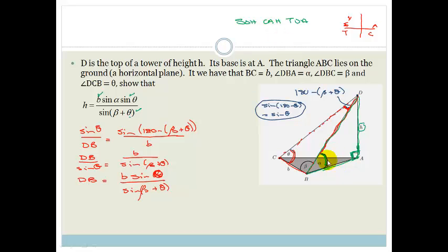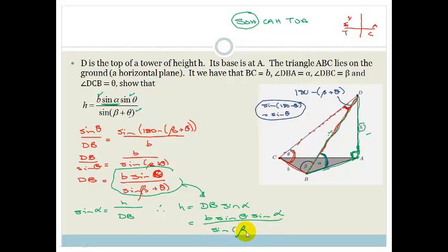So if we look at this, we've got this side which is our part in use. We want the opposite. So we're going to use sin. So we can say that sin of alpha is equal to opposite which is h over the part in use which is DB. Therefore, we can say that h is going to be DB sin alpha. But DB is all of this. So now all we do is substitute. So it becomes b sin theta sin alpha all over sin of beta plus theta. And there you go.